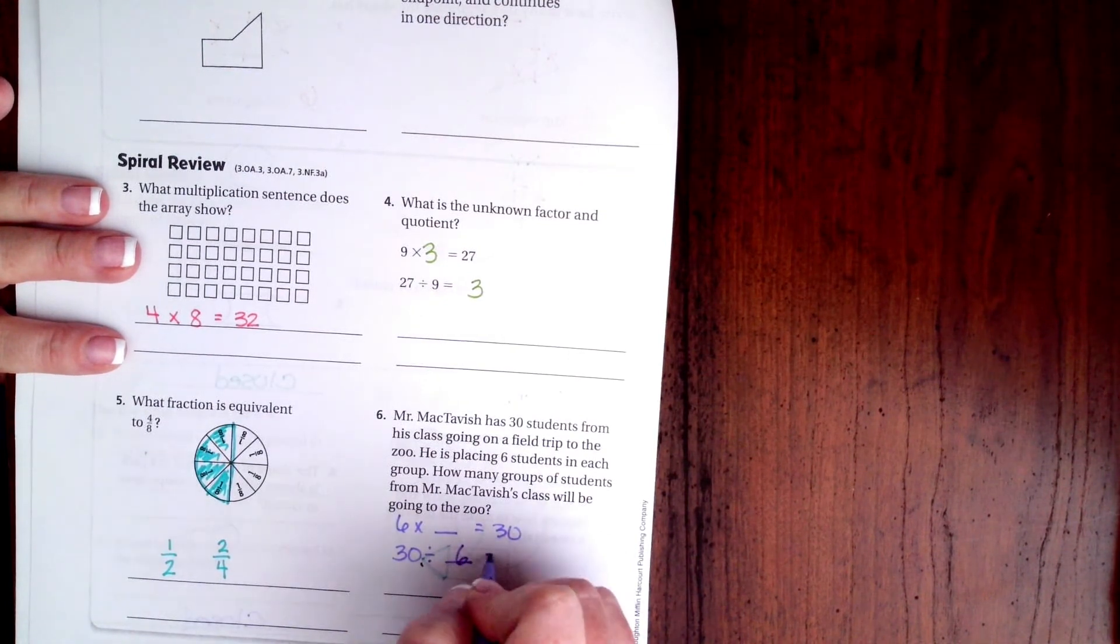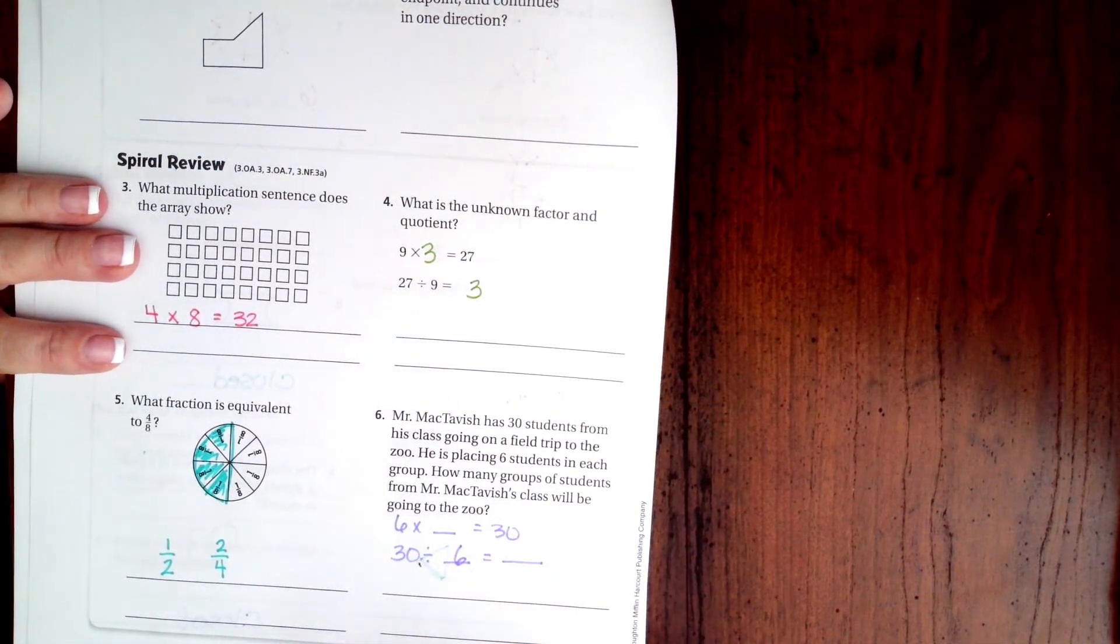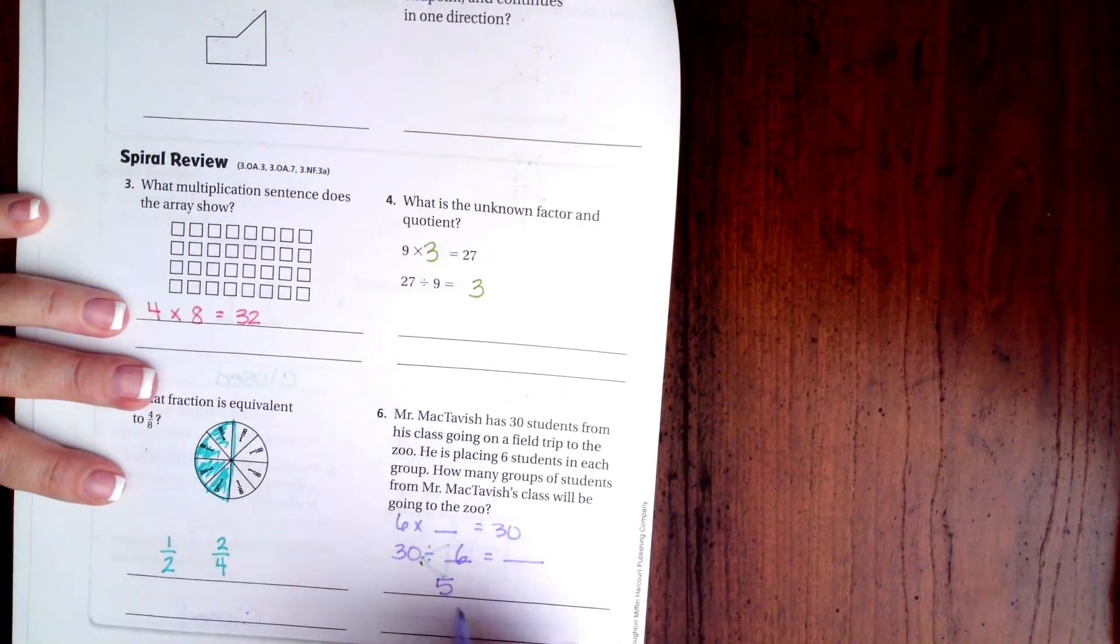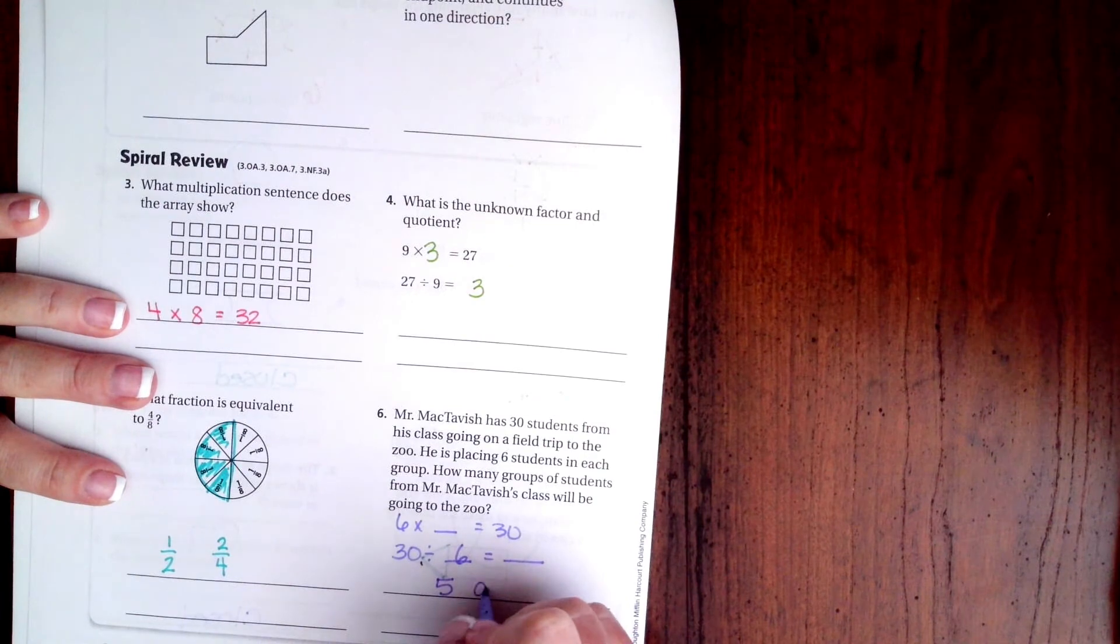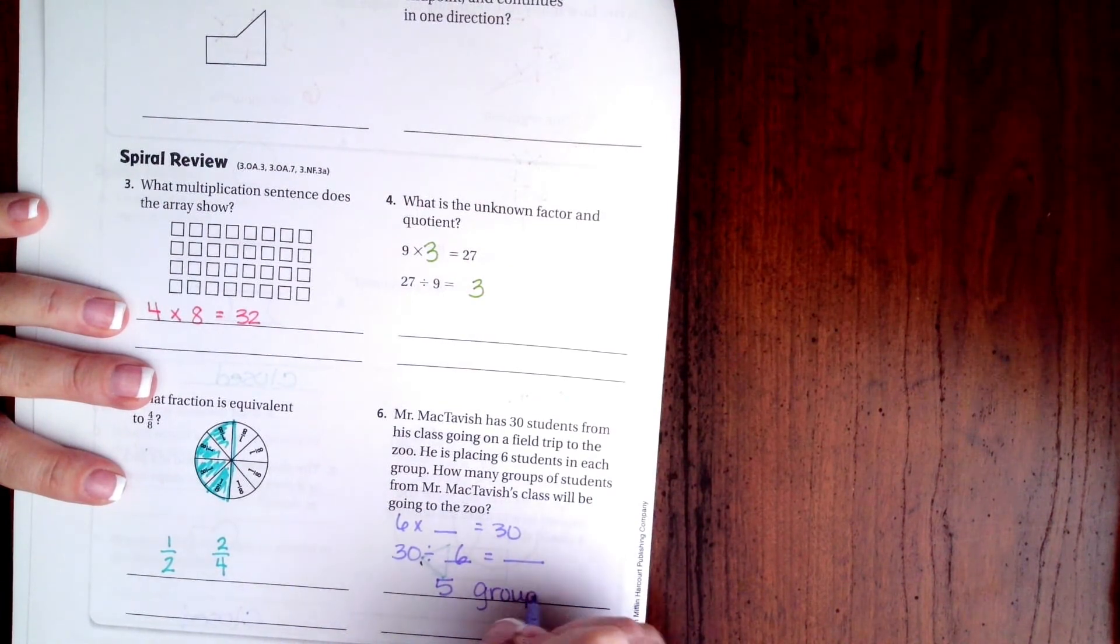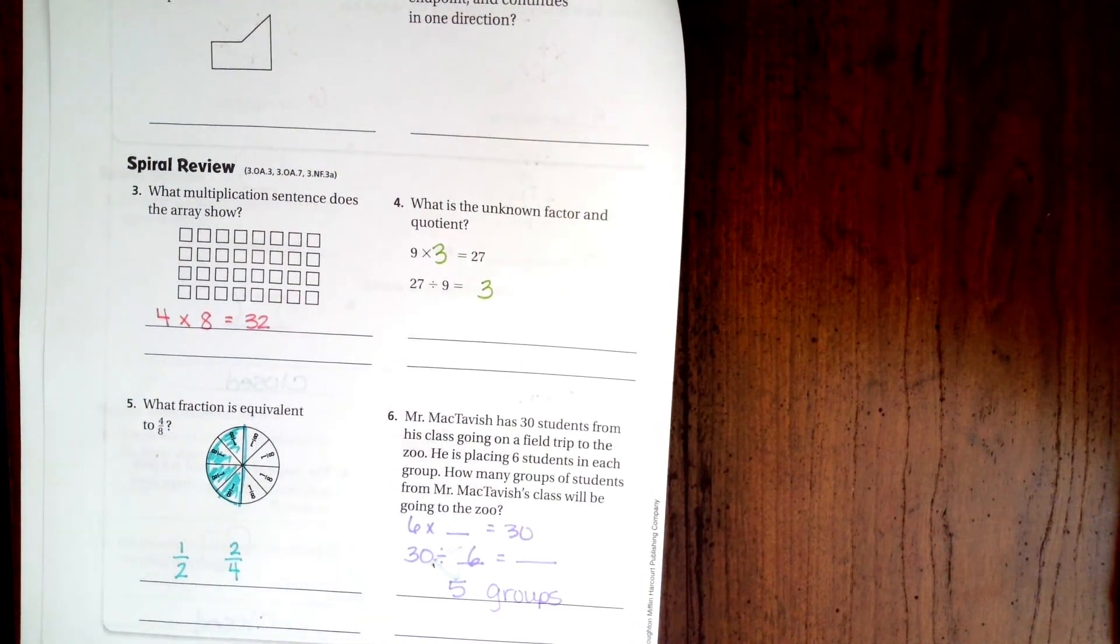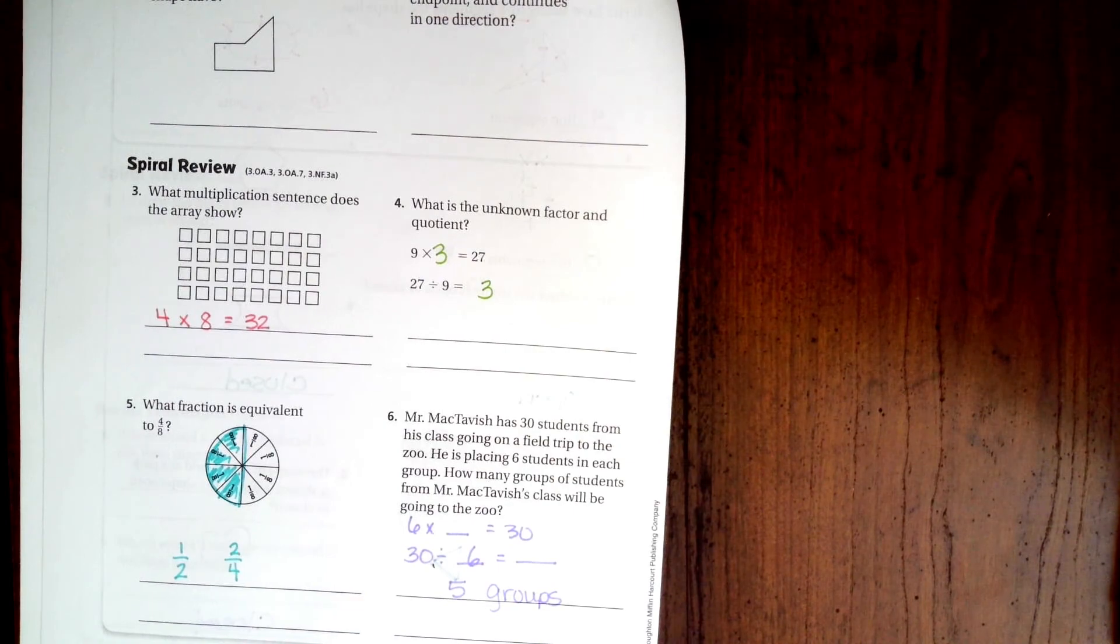So six times five is thirty, so five groups. Make sure we leave a word answer for our word problem. All right guys, thanks for hanging out for 12.1. Come on back for 12.2, see you soon.